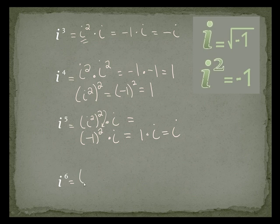i to the sixth is the same as i squared to the third power. Remember, when I have a power to a power I multiply — 2 times 3 gives me 6. i squared is negative 1, so this is negative 1 to the third. Negative 1 to the third power is negative 1.